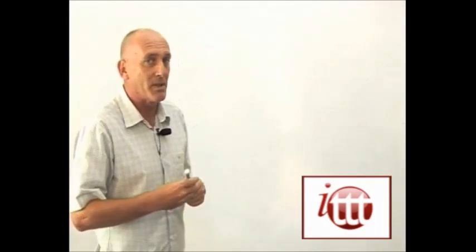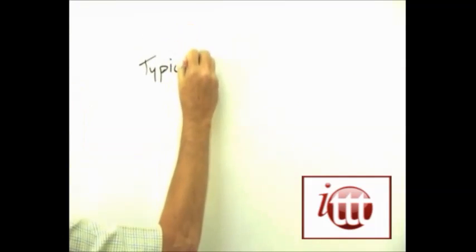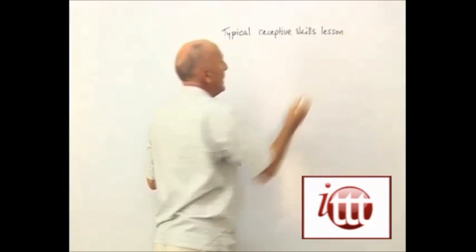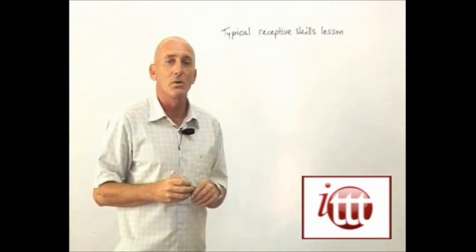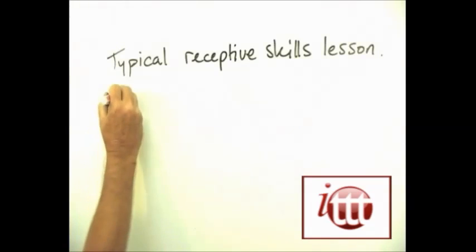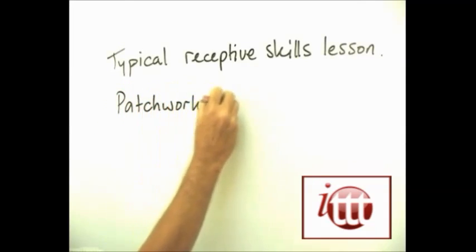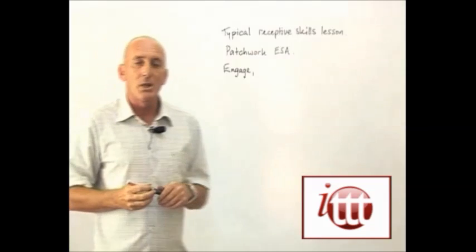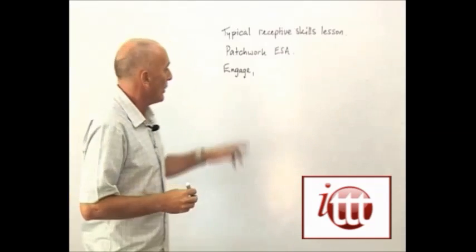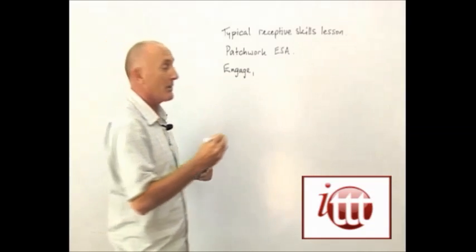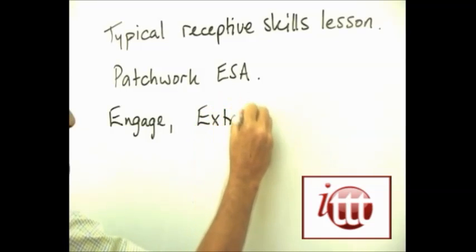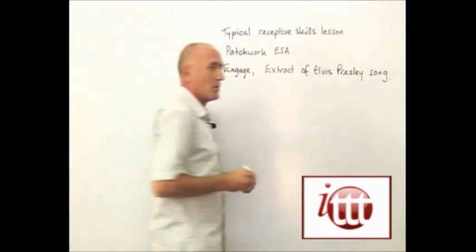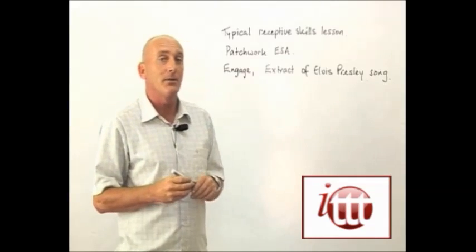So let's have a look at a typical receptive skills lesson. The main focus of this lesson is going to be reading, although there will be some listening involved as well, and it's going to be a patchwork ESA lesson. As a patchwork lesson, it will start off with an engage, and what we're going to do is to play an extract about Elvis Presley — an Elvis Presley song — and we're going to ask the students if they know who it is and if they know anything about him.